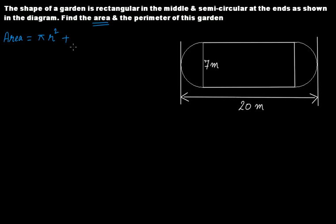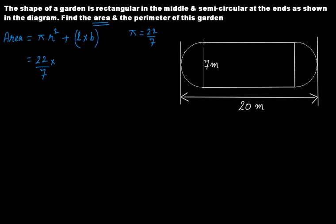The area of a rectangle is length multiplied by breadth. Taking pi as 22/7, we note that the total width is 7 meters. Since 7 meters is the diameter of each semicircle, the radius r equals diameter divided by 2, giving r equals 3.5 meters.